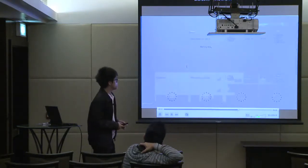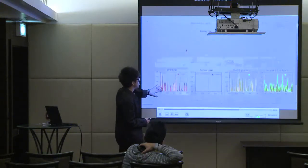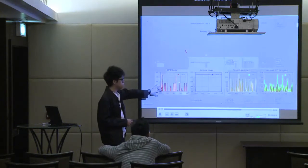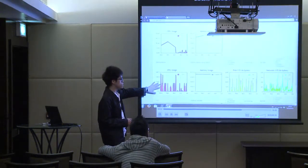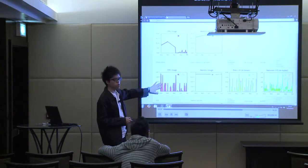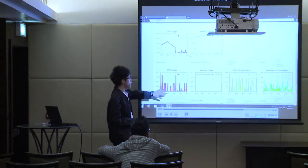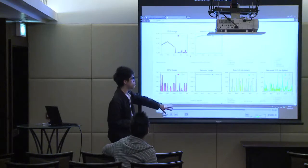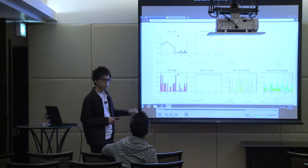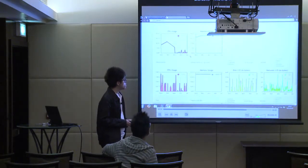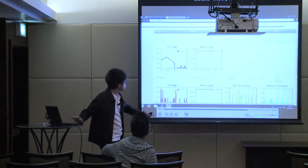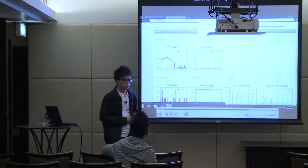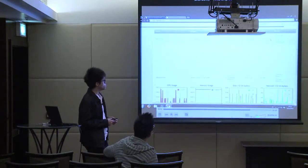I also mentioned the statistics — that's something not built into OpenStack. We developed our own performance monitoring system. Users can monitor the CPU usage, memory usage, disk IO, and also network IO of each VM. The data is real-time generated and updates every several seconds.